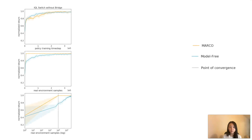We empirically evaluate Marco on the switch riddle without bridge, switch riddle with bridge, and the multi-agent particle environment. We compare Marco with the best performing model-free baseline from QMix, VDN, and independent Q-Learning. For each experiment, the algorithm chosen for Marco's policy optimization step is the same as the model-free baseline it is compared to.